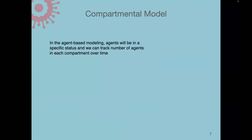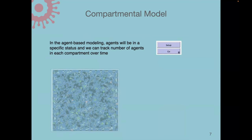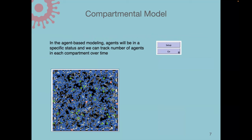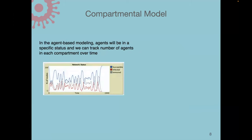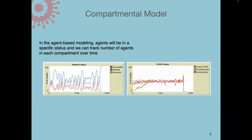In the compartment model, agents are in a specific status at each time step and we can track the number of agents in each compartment over time. When we click setup, the nodes are initialized with defined average connections, long-distance connections, and the other attributes explained previously. At each time point the model checks the status of all agents and updates their status based on their previous status and the neighbors they have.